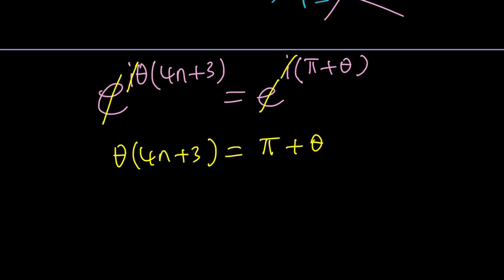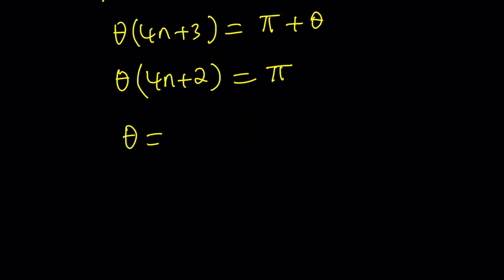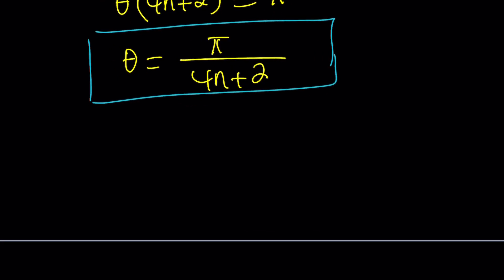Theta times 4n plus 3 equals pi plus theta. How do you solve for theta? Our goal is to find theta because we found r. r equals 1. And now if you can find theta we can write z because remember we were trying to solve for z and z is r e to the i theta. So that's what we're looking for. So from here I can isolate theta but bring the other theta here. That's going to bring one that's going to subtract one theta. So it's going to make it 4n plus 2 equals pi. And finally theta can be written as pi over 4n plus 2. Notice that 4n plus 2 is an even number but not just any even number. An even number that is not a multiple of 4 because it leaves a remainder of 2. In other words this is 2 mod 4.